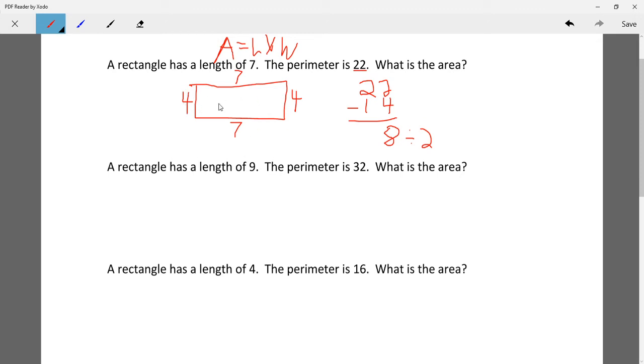So 8 divided by 2 is 4, and now, if we add all of these up, it should add up to 22. So 7 plus 4 is 11, and 4 plus 7 over here is 11, 11 plus 11 is 22.